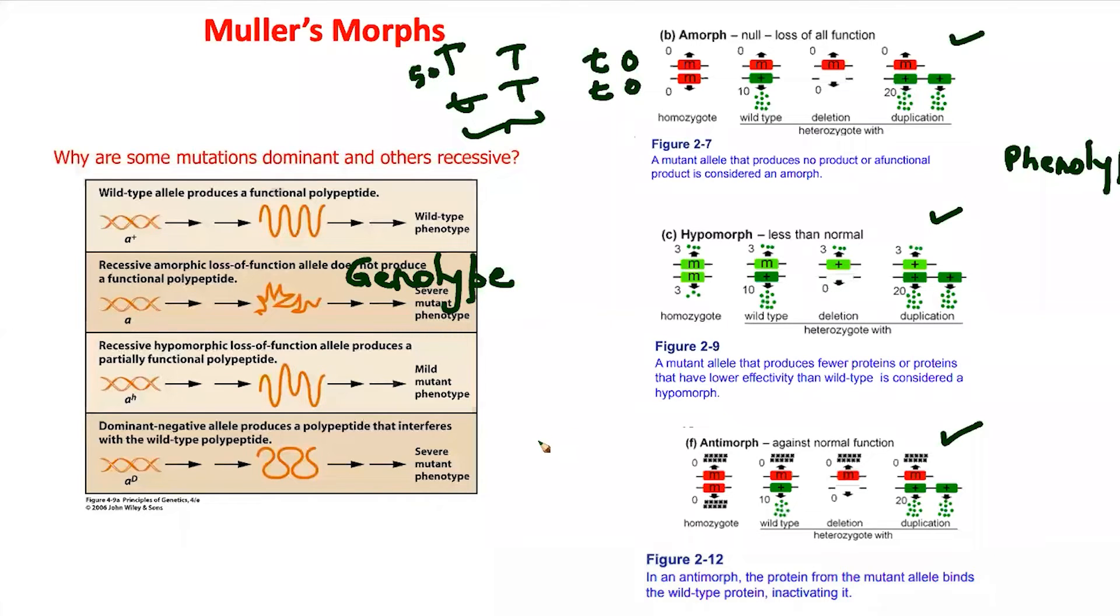Student asks: In the last case, are there three alleles shown with two green parts? There are cases where during DNA replication there's a mistake and the gene duplicates. If the gene duplicates, you have two copies usually right next to each other in the genome. In that scenario, you have double the amount of protein - that's called a hypermorph, getting more activity.